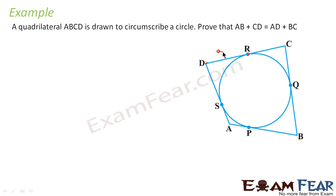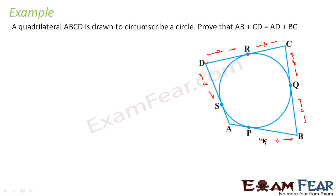Let's assign variables: suppose one tangent length from a vertex is A, so the other from that same vertex is also A. If another tangent length is B, then that side is also B. Similarly, if one length is C, the other is C, and if one is D, the other is D.